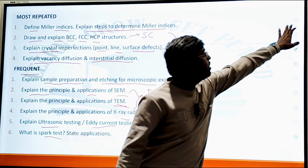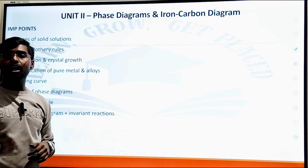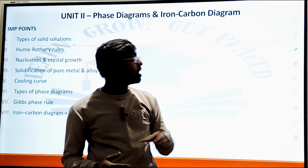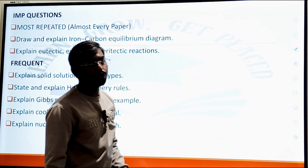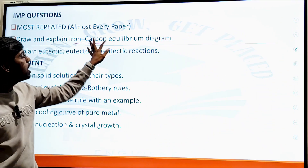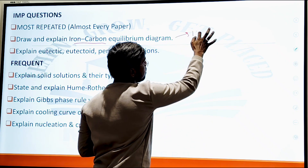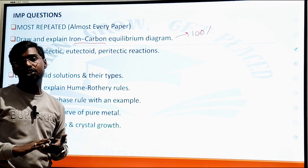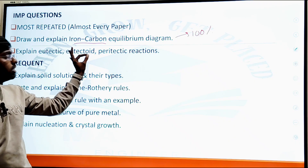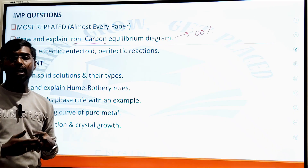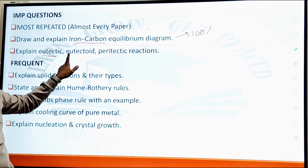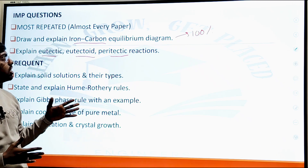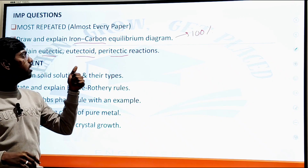Unit Number Two covers the phase diagram and iron-carbon diagram. The most important question — 100 percent expected in university examination — is the iron-carbon equilibrium diagram. Also asked are the eutectic, eutectoid, and peritectic reactions, which should be explained using the iron-carbon diagram.